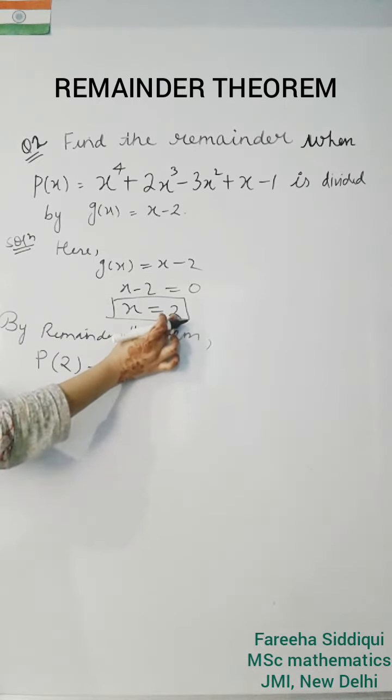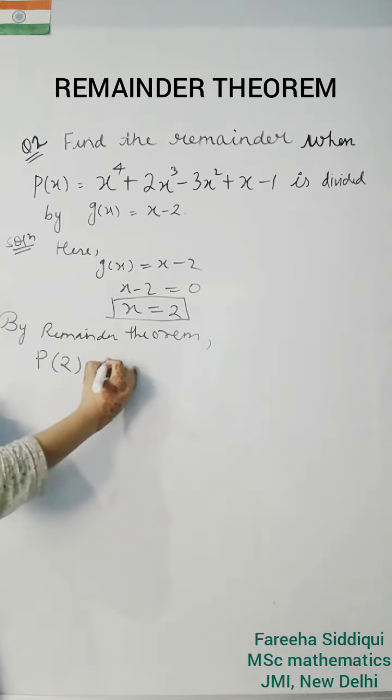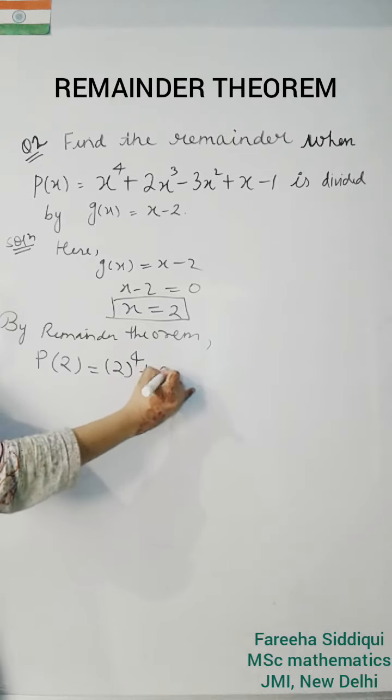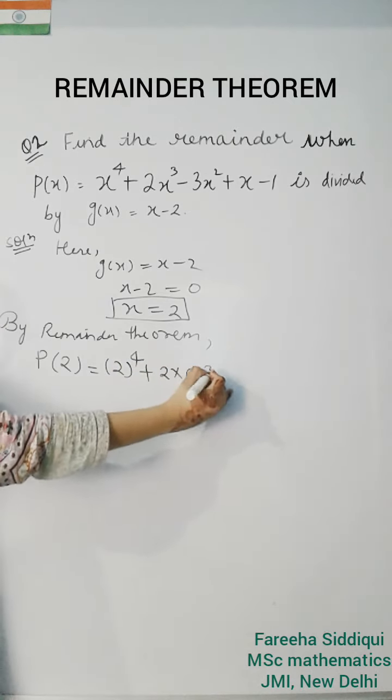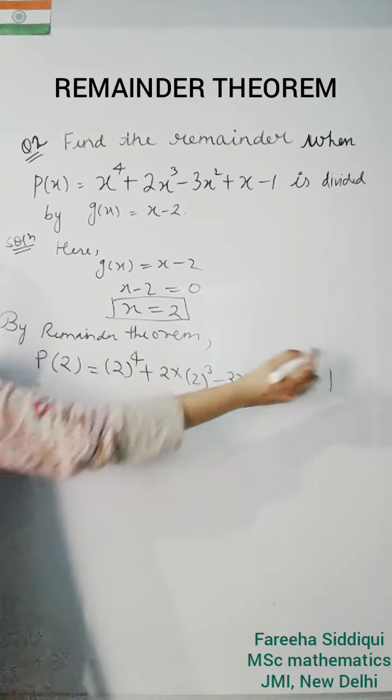So put this value of x in px to get remainder. So remainder will be equal to P of 2. So put here 2 to the power 4, 2 into 2 cube minus 3 into 2 square plus 2 minus 1.